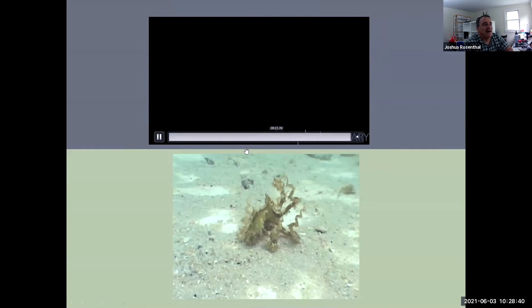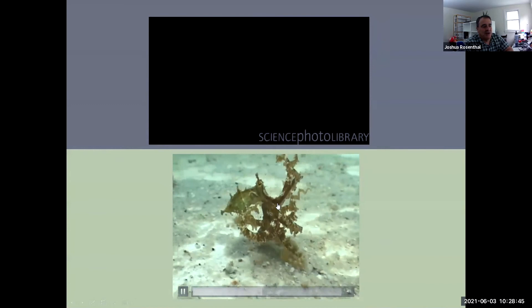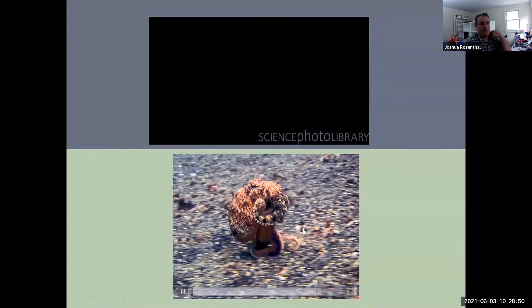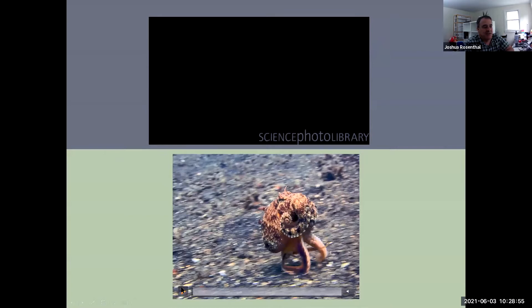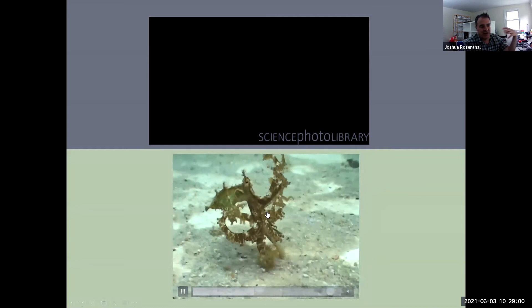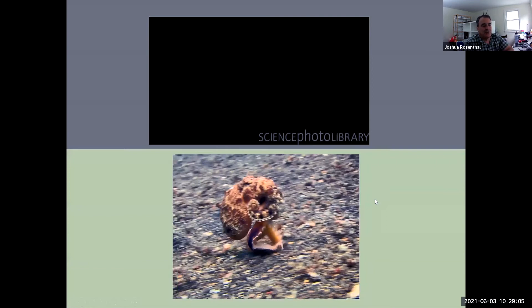And then here we have what we call a mimic octopus off of Indonesia who uses their legs to locomote and to cause camouflage at the same time, either looking like a seaweed where it can change its skin, its texture, its colors to look exactly like a seaweed or to look like a rock on the bottom that's walking away.